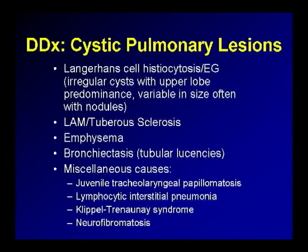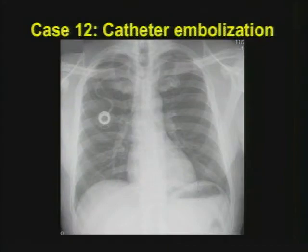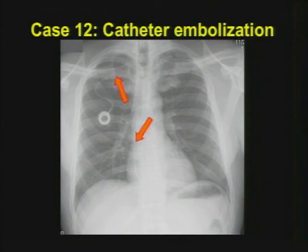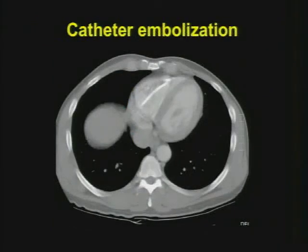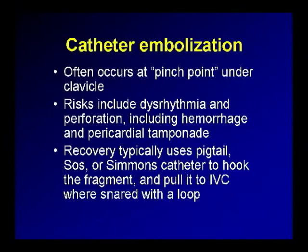Case twelve was a case of catheter embolization. This was a patient who came in completely asymptomatic, though sometimes these patients can have very severe complications. The classic location is at one of the pinch points as the catheter crosses into the thoracic inlet. By chronic motion, there can be weakness instilled into the catheter, causing it to fragment — and there's a catheter fragment sitting in the heart, visible in the right ventricular chamber on CT. The common problems to worry about are dysrhythmia, but the severe complications — though more rare — include erosion through the myocardium and pericardial tamponade, causing sudden death. You really should try to get this catheter out of the heart.